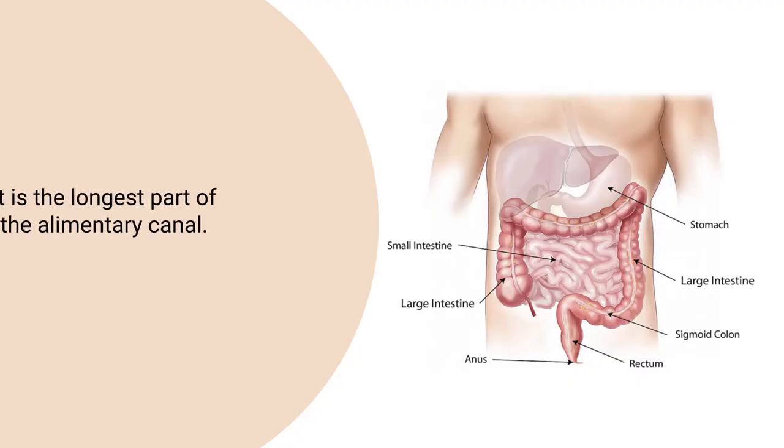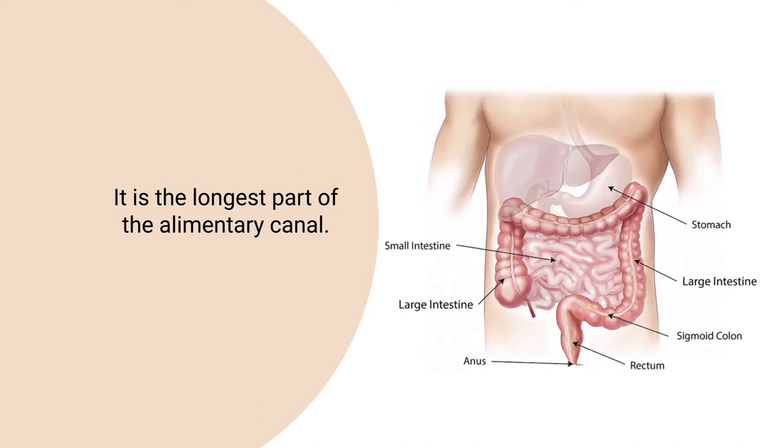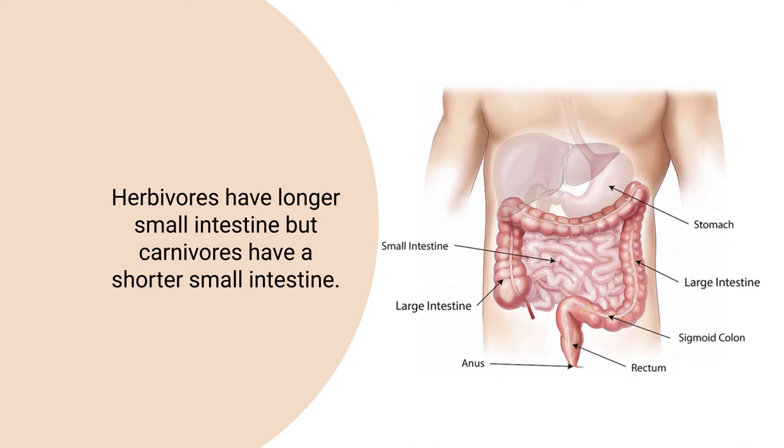Food from the stomach then moves towards the small intestine, which is the largest part of the alimentary canal — sometimes 2 or 3 meters long — where most food is digested and absorbed. You can ask students to explore interesting facts, like what is the length of the alimentary canal, or whether the small intestine of carnivores is long or short.